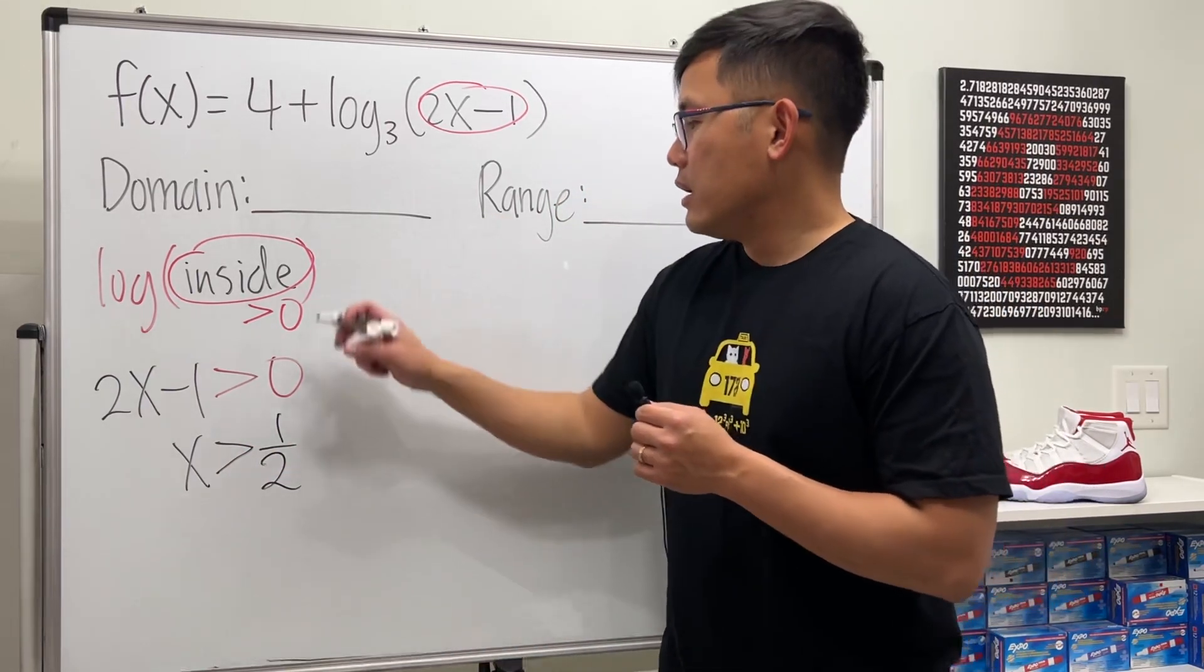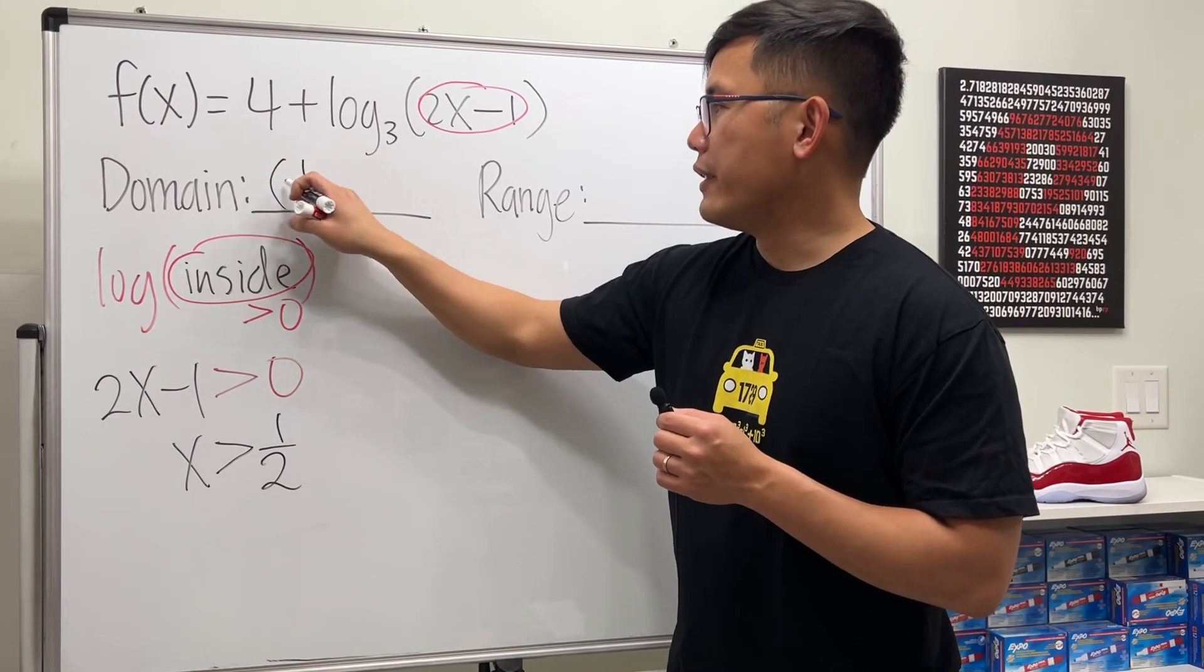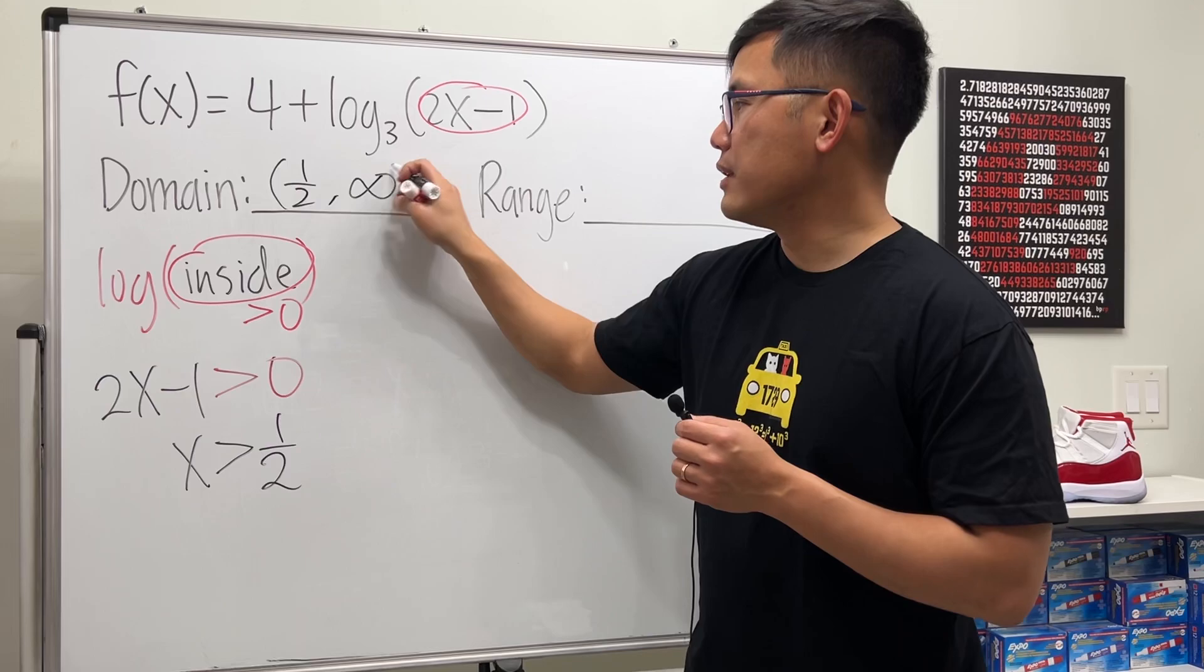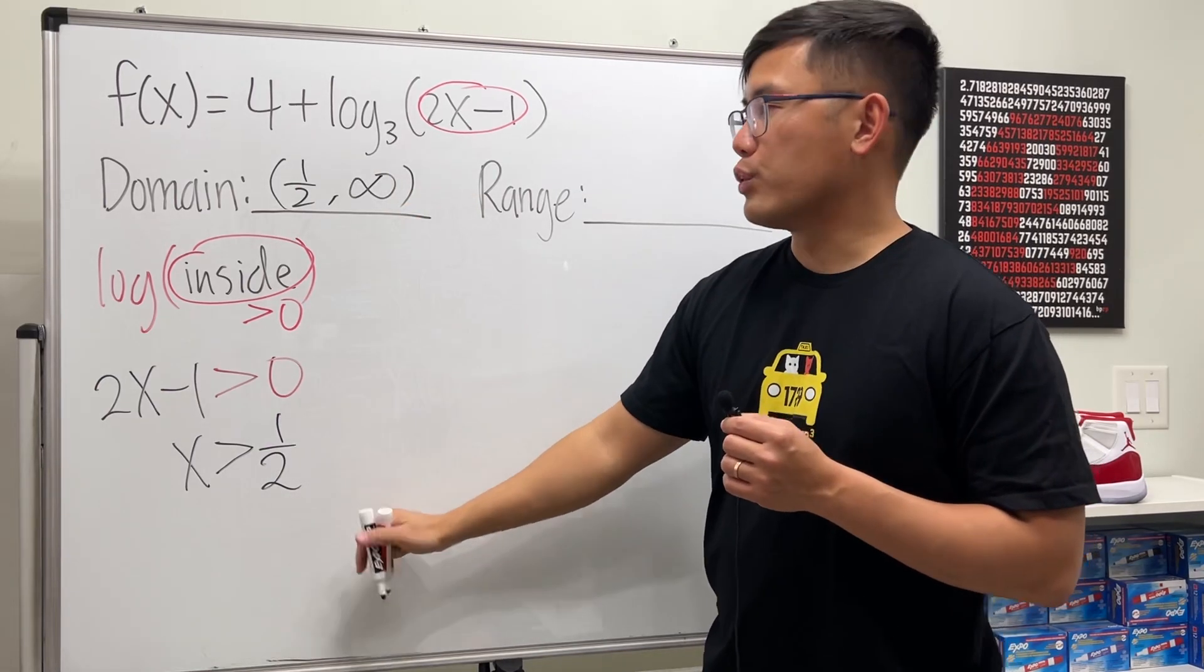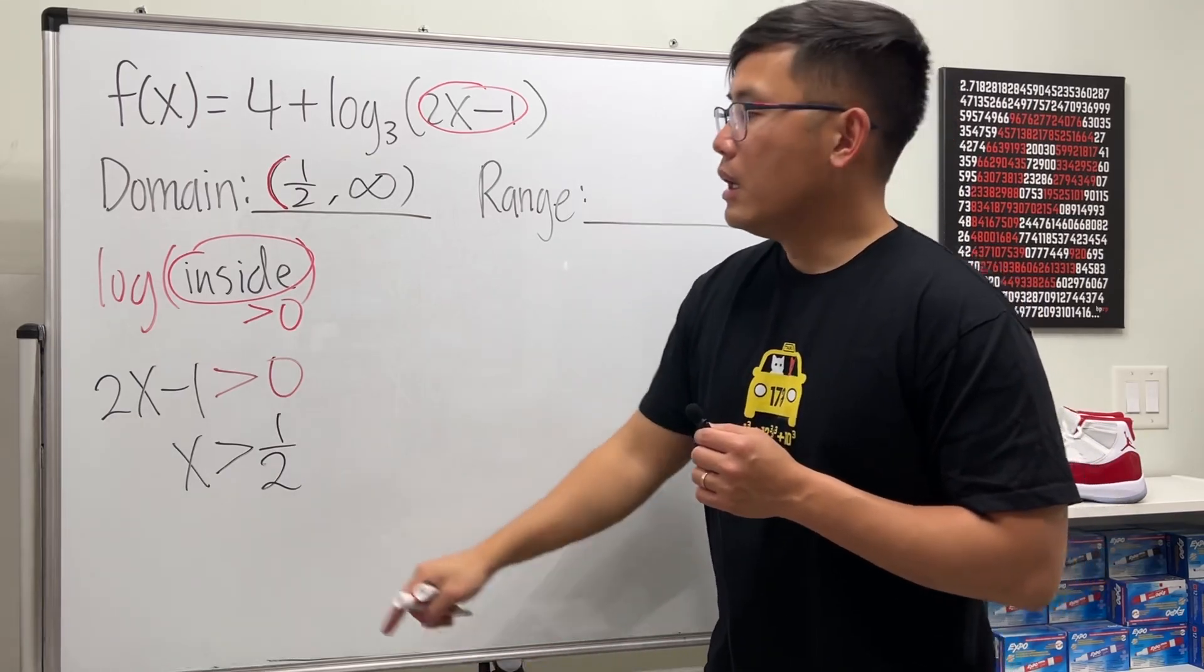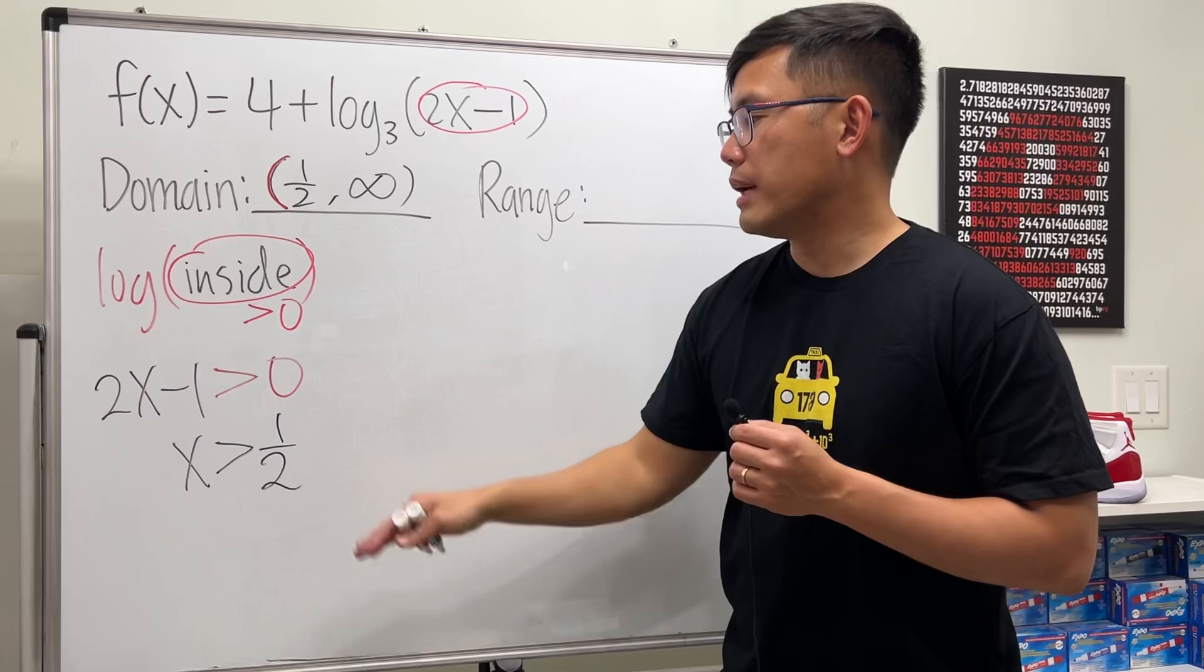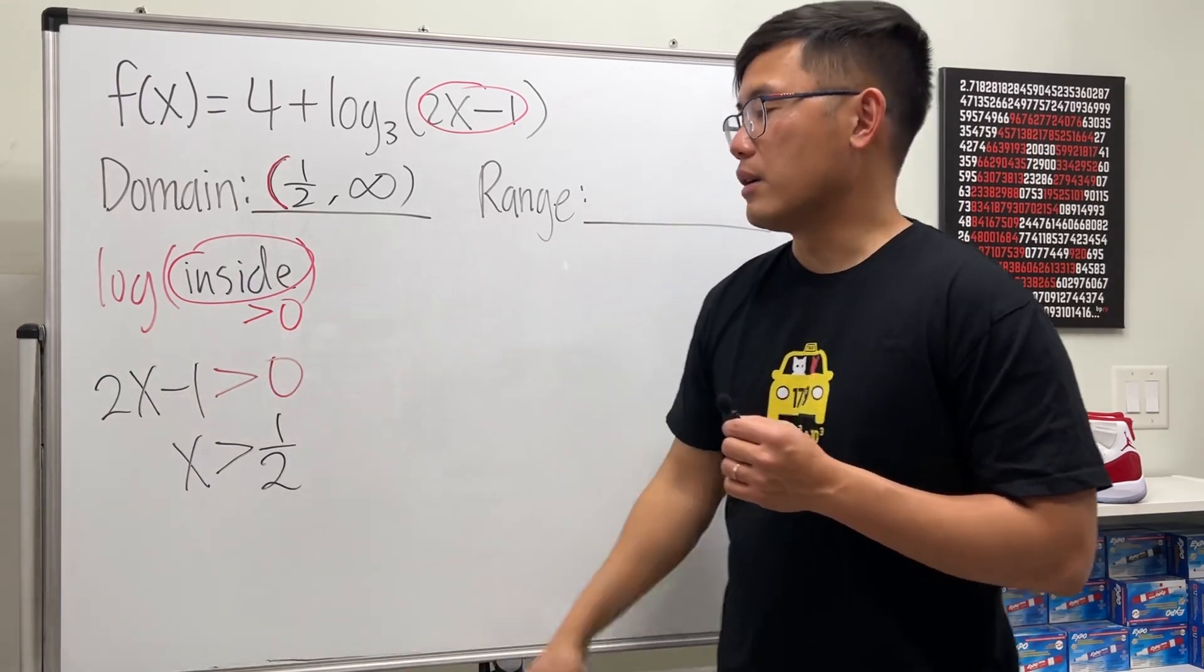That's the domain. We can write this as an interval notation: (1/2, infinity). Notice we do not include one half. If we have a square root, the inside can be zero, but when we have a log we cannot have zero inside, so that's why it's just a greater than.